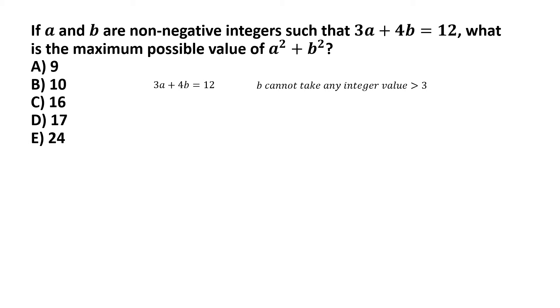So, the greatest integer value that b can take is 3. And if we plug in b equal to 3 in this equation, 3a plus 4b equal to 12, and solve for a, we get a equal to 0. And for this, a square plus b square turns out to be 9.